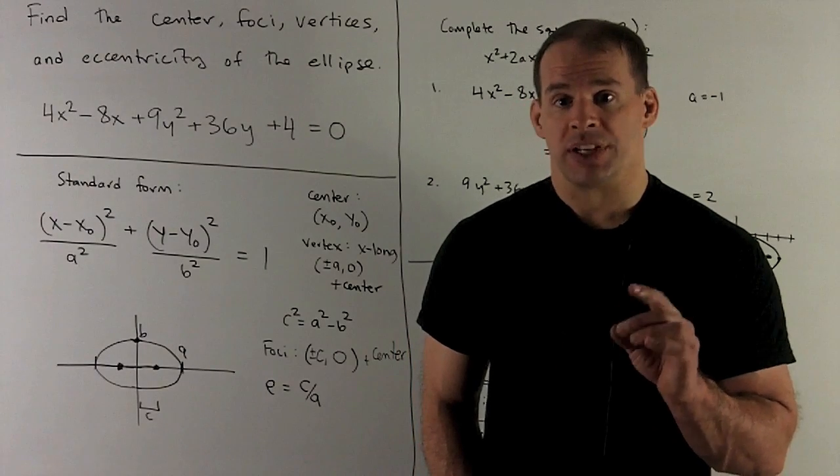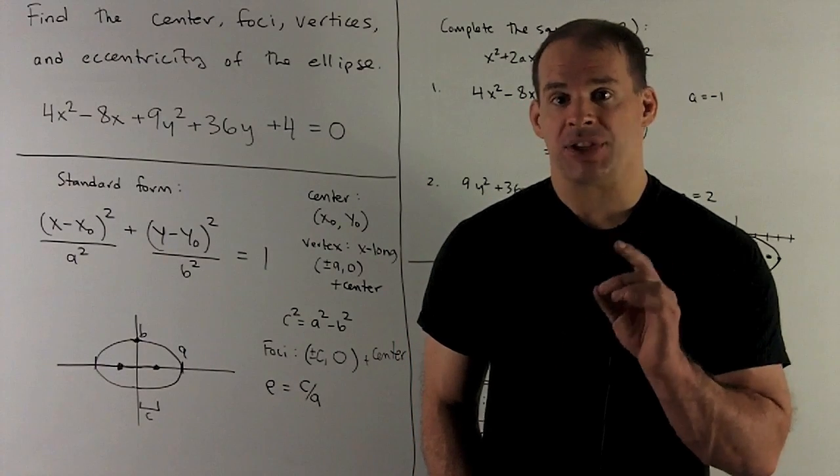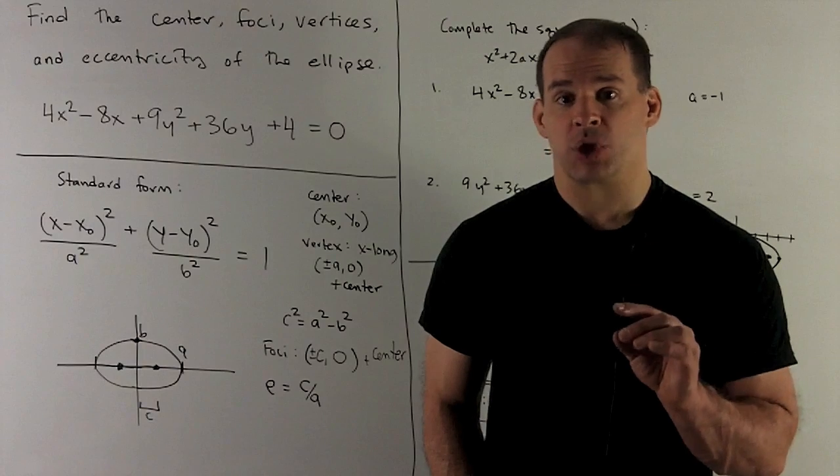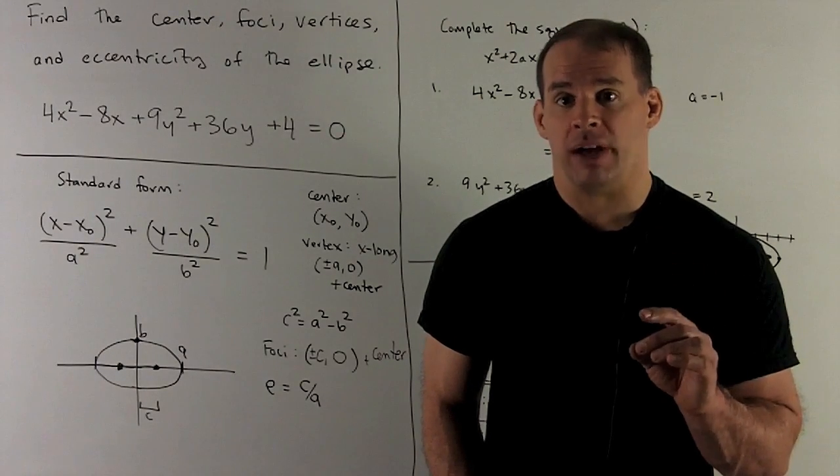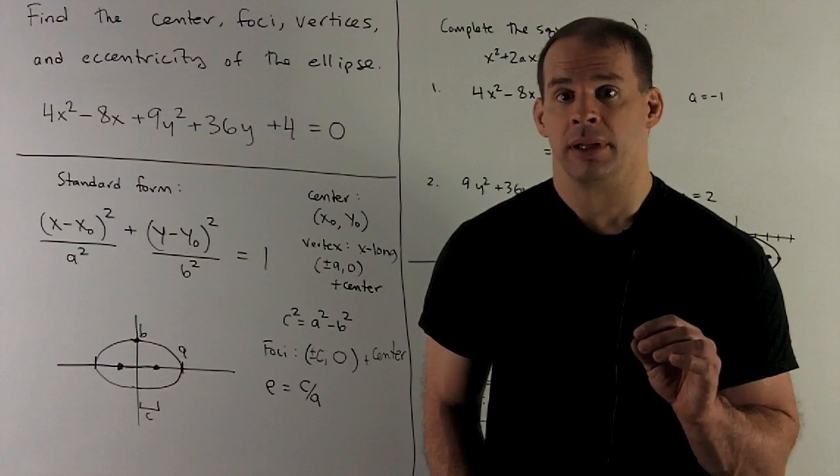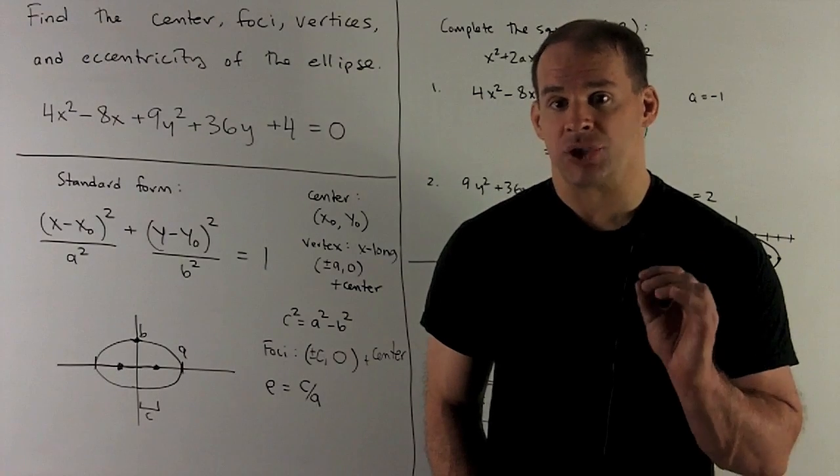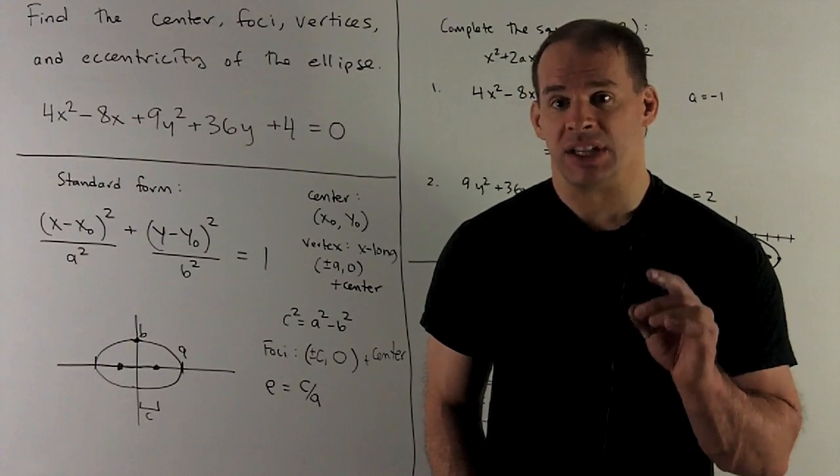Then, we're just going to take our center, take x₀, add and subtract c from that. We have the same y₀. That'll be the location of our foci. Then, finally, the eccentricity will just be c over a.